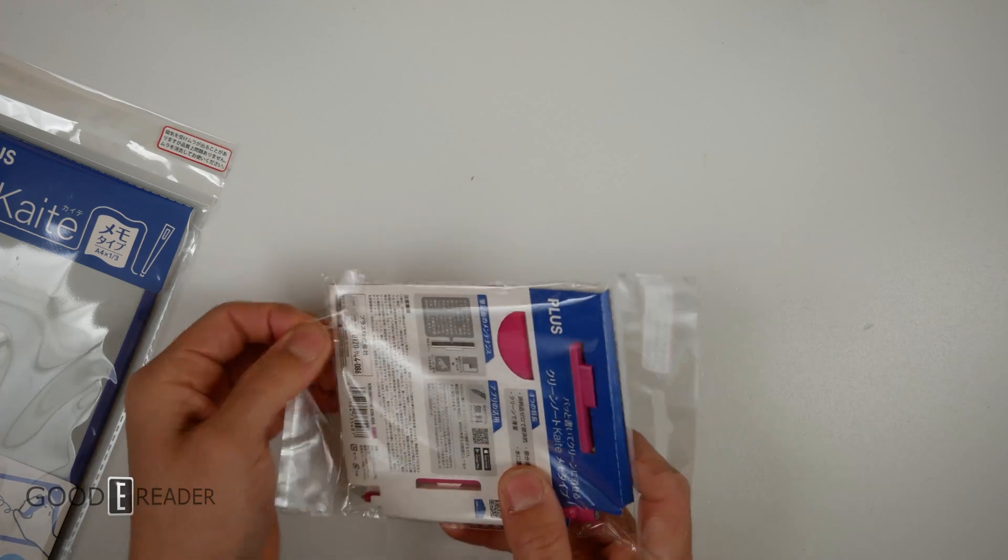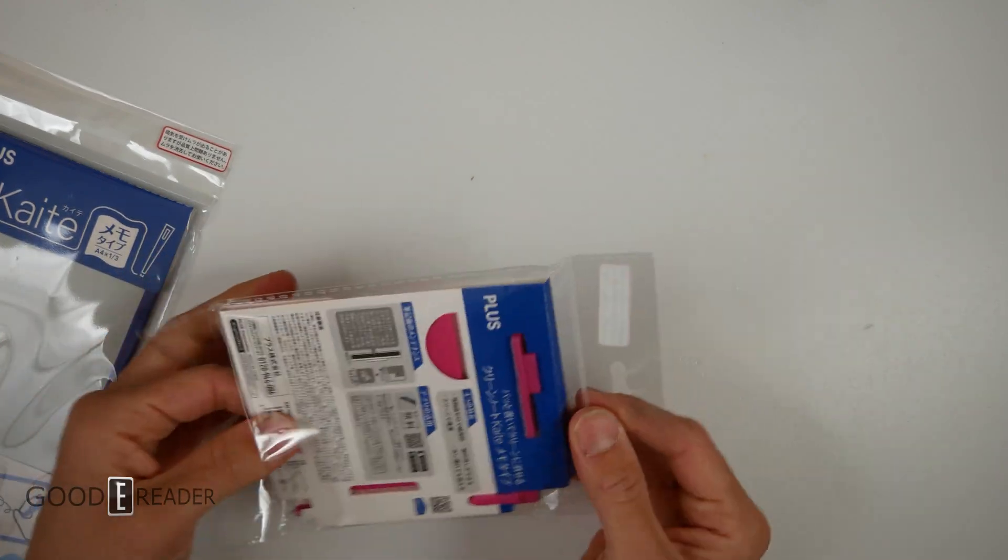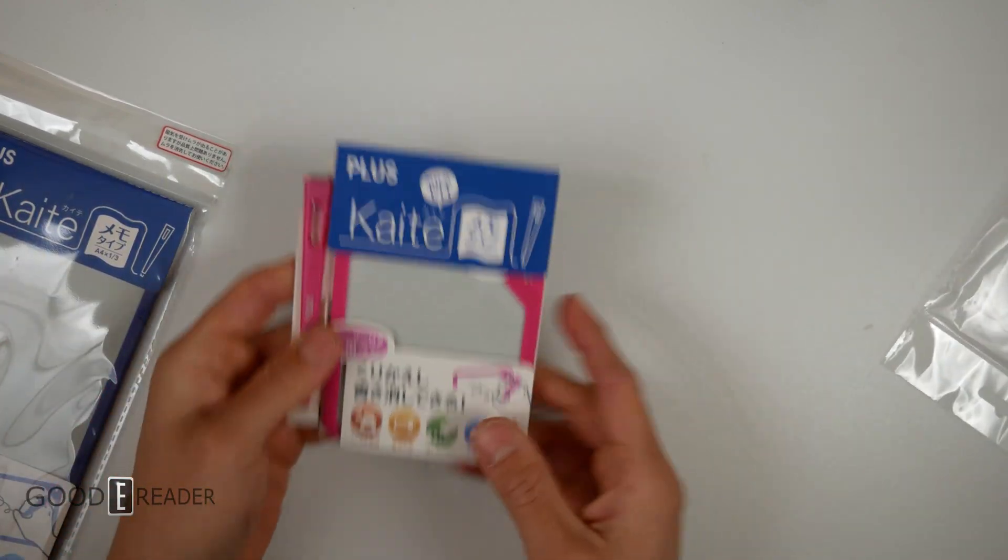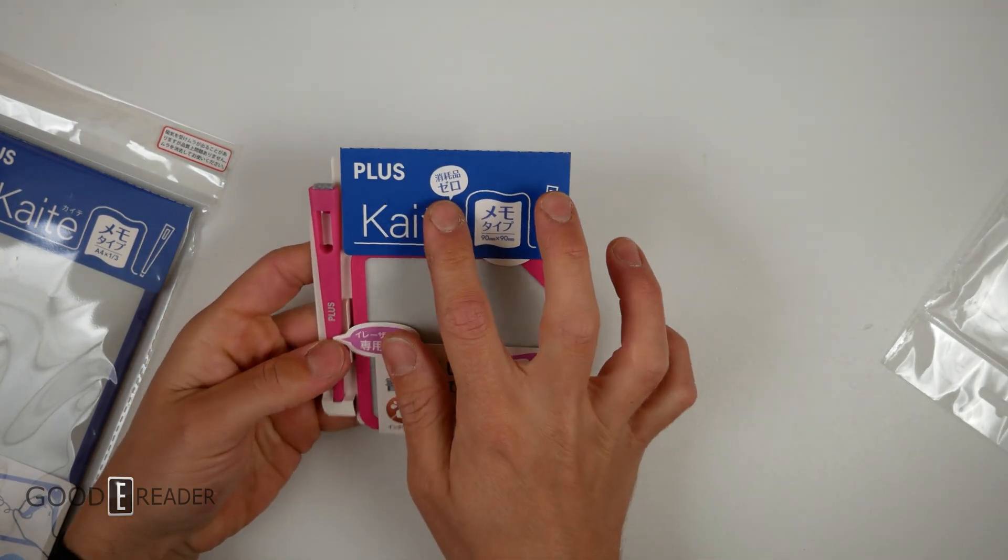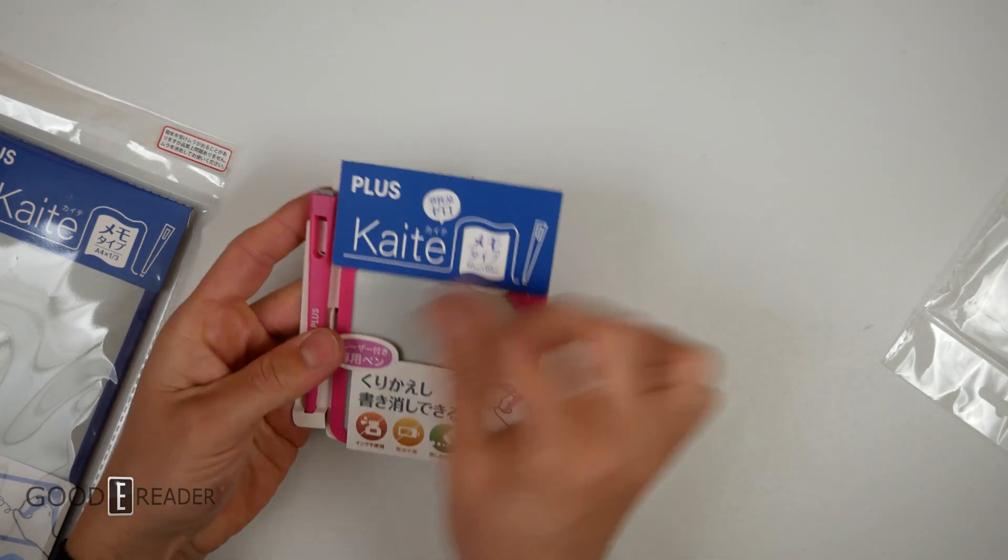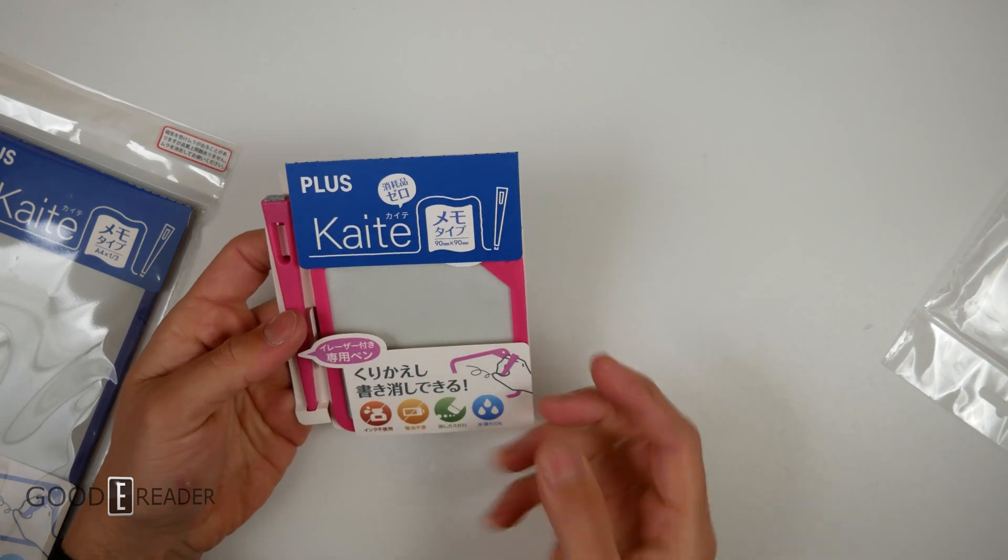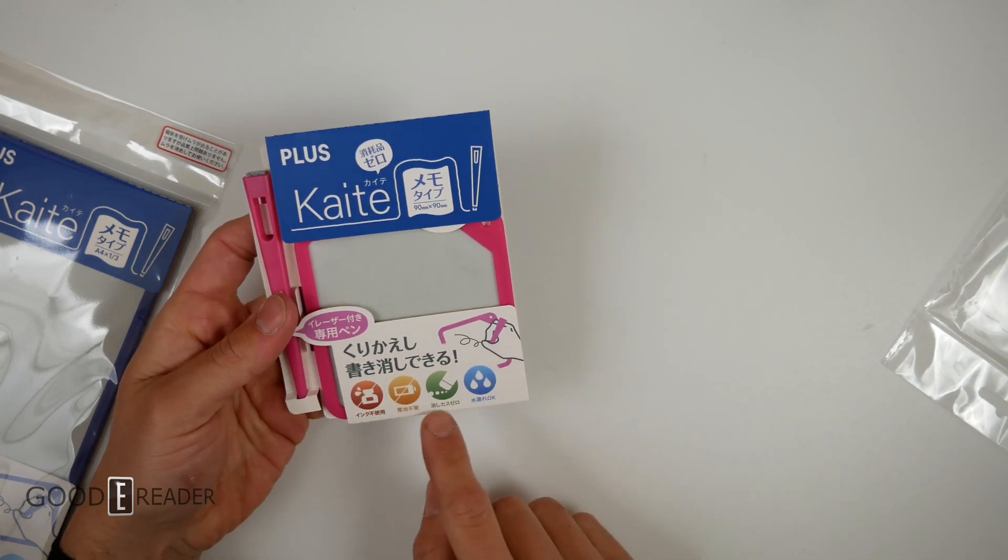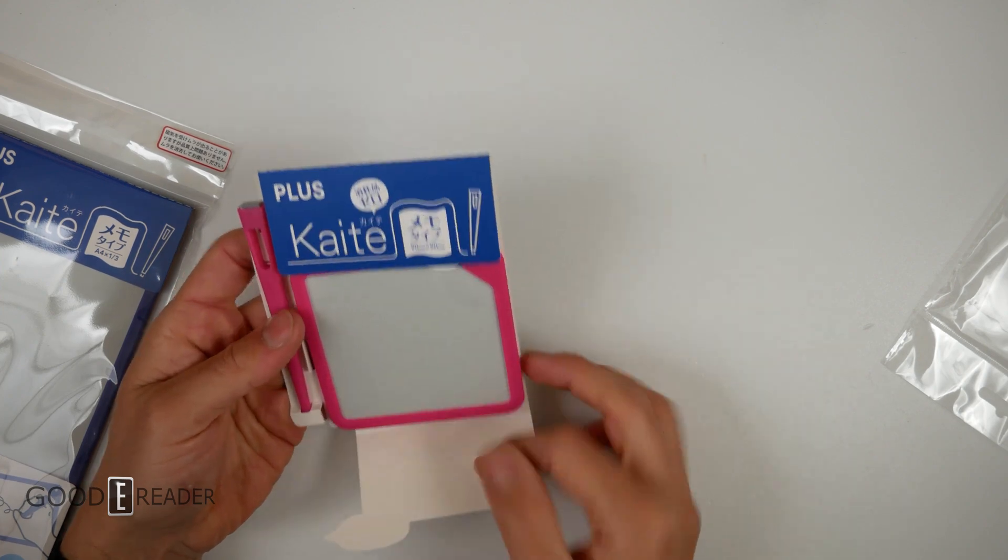They are what they are. They're just little memo pads. So we are going to open this up and translate a couple things here. It basically says no consumables required. So you don't need to rip off paper each and every time. And this also says there's no ink. There's no batteries. You can just erase it. Waterproof is okay.